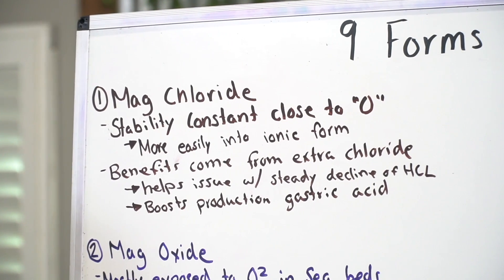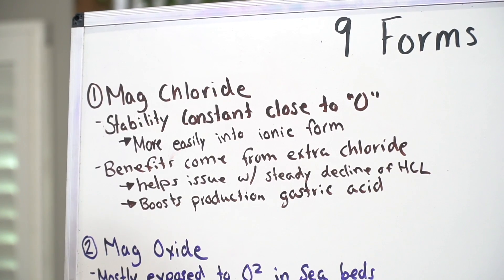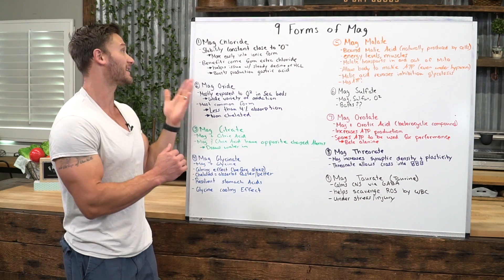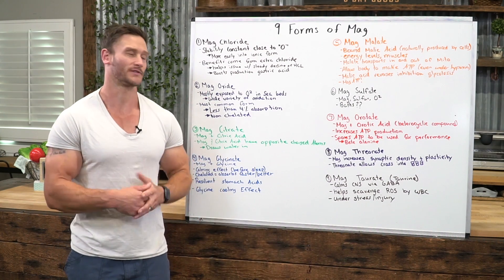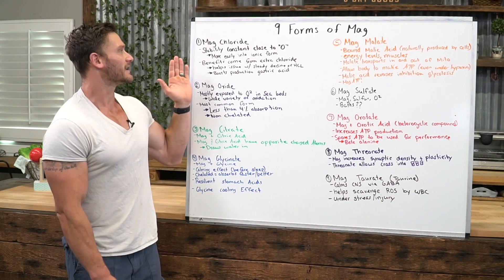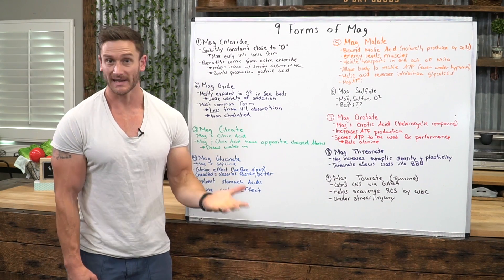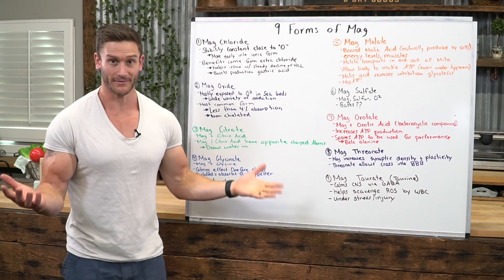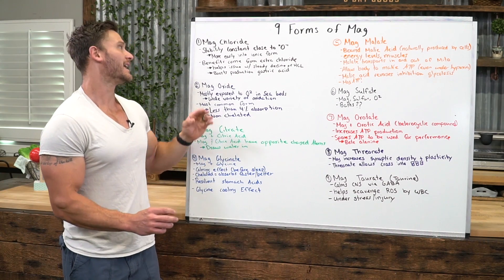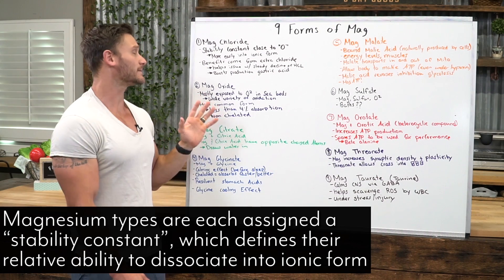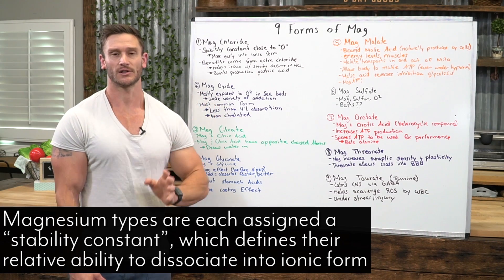The first one is going to be magnesium chloride. If you look on the back of a label, you look on the back of any magnesium product, and you see magnesium chloride, it's important that you know what it's for. Magnesium chloride is interesting because it has a stability constant that's close to zero. That basically means that it converts more easily into an ionic form. So magnesium chloride has a stability constant close to zero, which means that it just dissolves and dissipates into water, into your body relatively easily.